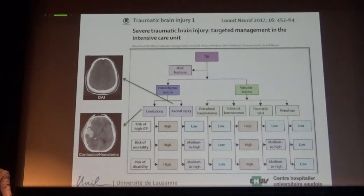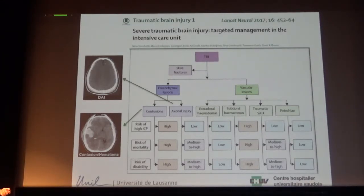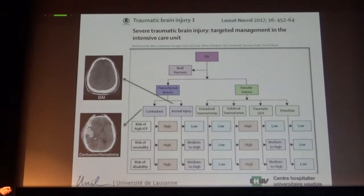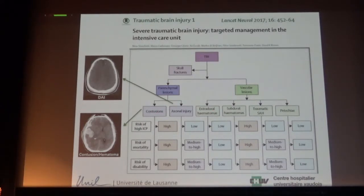CT scan helps you categorize the type of trauma and guides therapy and monitoring — particularly regarding the risk that patients may develop intracranial hypertension. Some lesions you don't want to wait too long to evacuate. Others carry a lower risk of intracranial hypertension, while intracerebral lesions like hematoma or contusions are prone to high ICP. CT scan is essential to guide management.